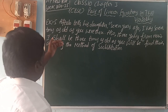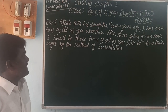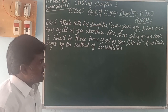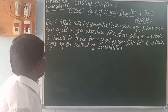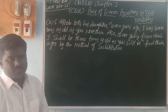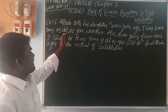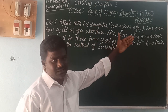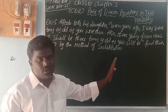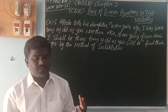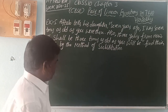Next, Example 5. Aftab tells his daughter: 7 years ago, I was 7 times as old as you were then. Also, 3 years from now, I shall be 3 times as old as you will be. Find the ages by the method of substitution. Given the conversation between father and daughter, 7 years ago Aftab's age was 7 times his daughter's age.